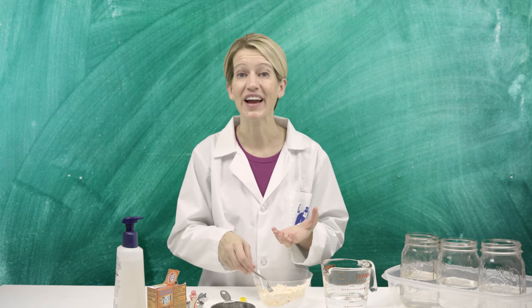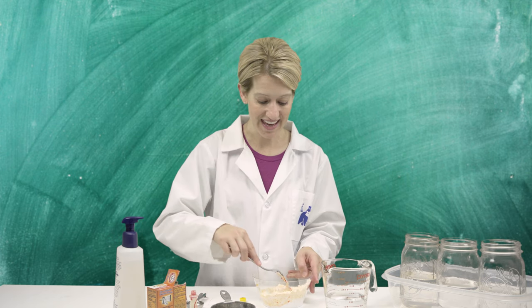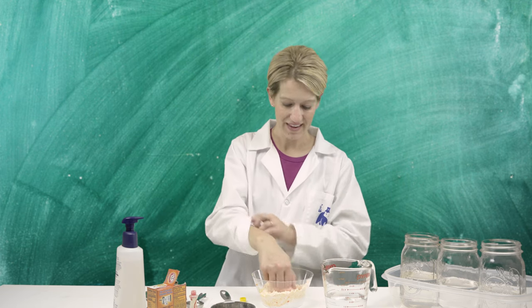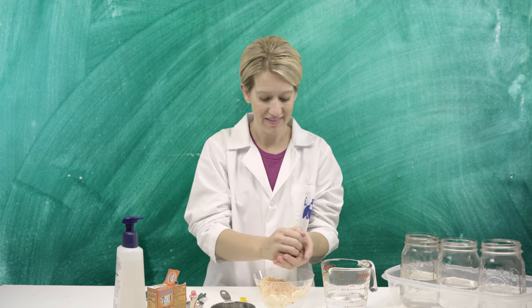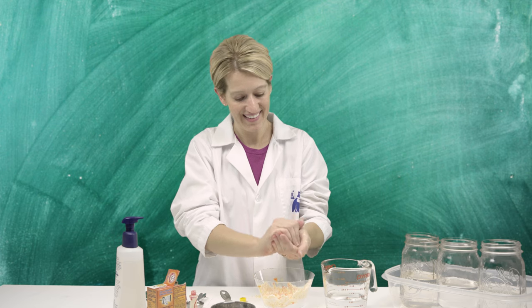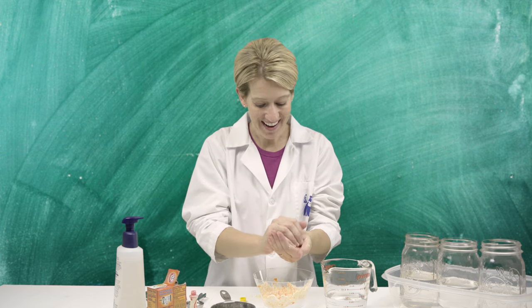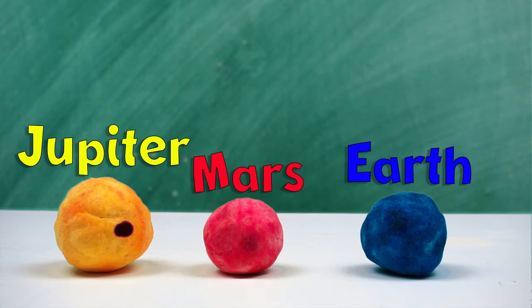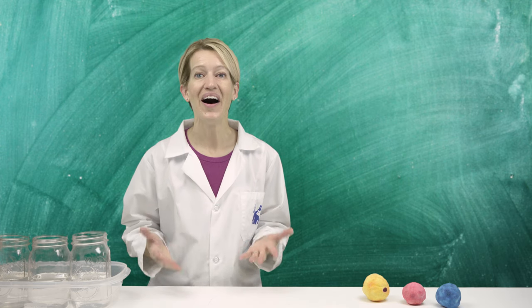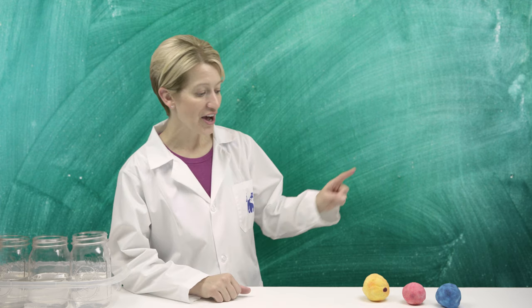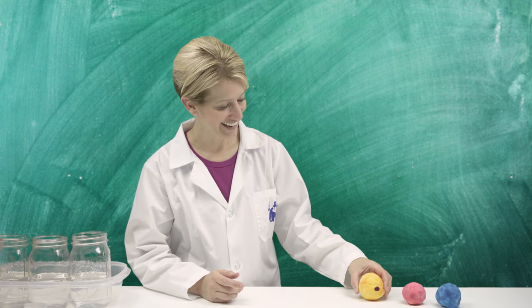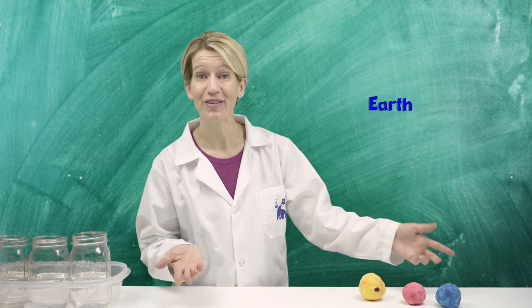So we've mixed everything together, and next we're going to use our hands to make them into balls, or in this case, into planets. Roll up your sleeves. See how they form into balls? So today we're going to make three exploding planets. Now that we have our three planets: Jupiter, do you see its big red spot? Mars and the planet Earth, of course.